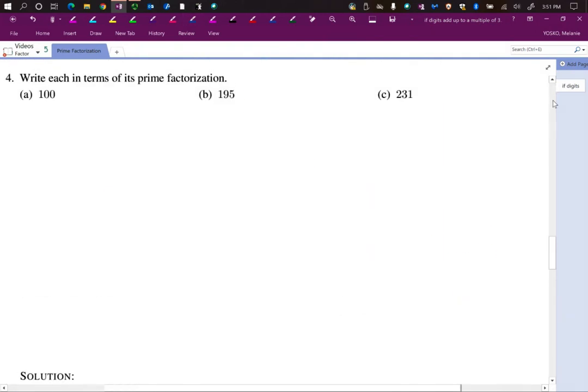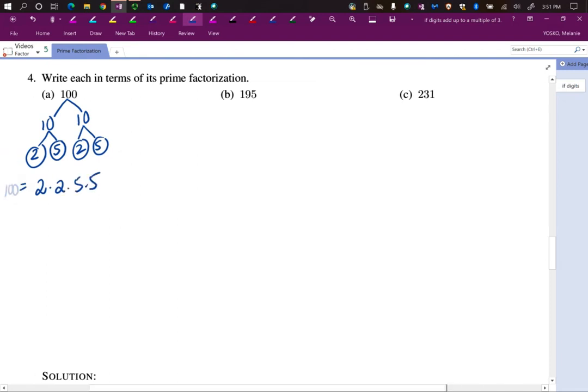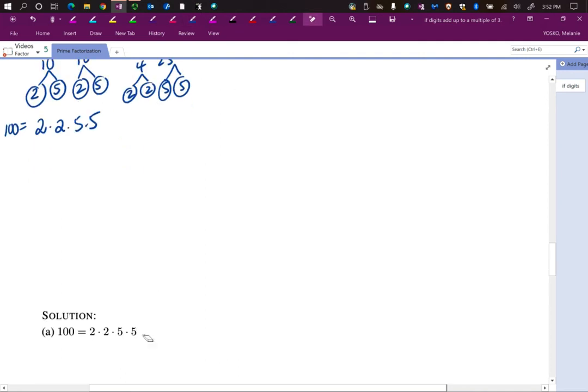100. So you may know right away, that's 10 times 10. So you can do 2 times 5, 2 times 5. So we get 2 times 2 times 5 times 5, and that should give us 100. You could have also done this as 4 times 25 and broken it down even further. There's many ways to do this. You just have to start with whatever factors you are comfortable with and keep going until everything is prime. This could also be written as 2 squared times 5 squared.